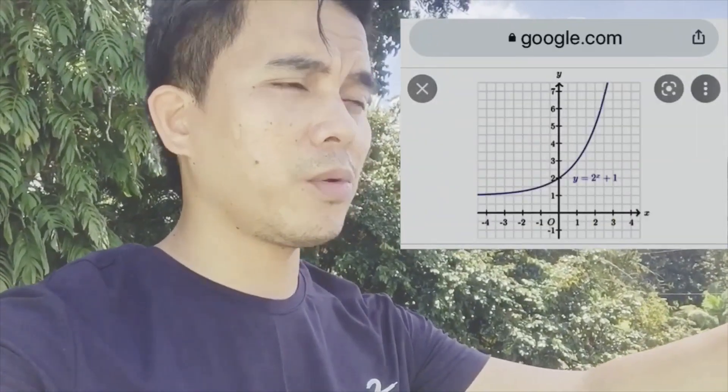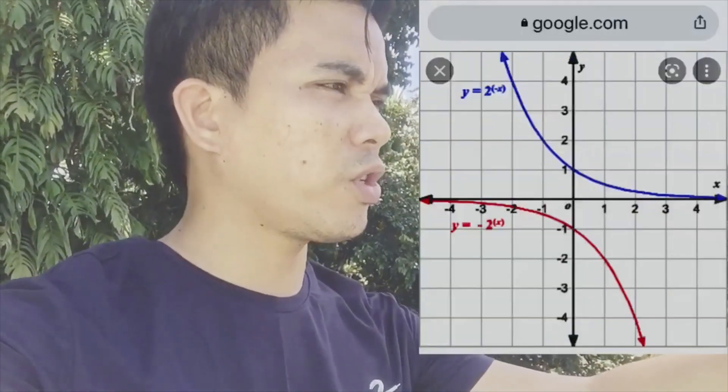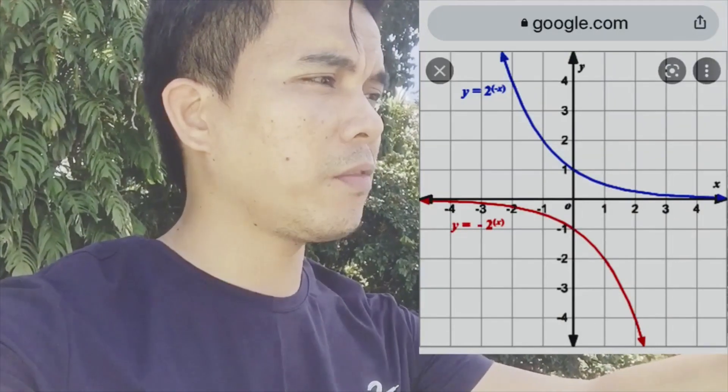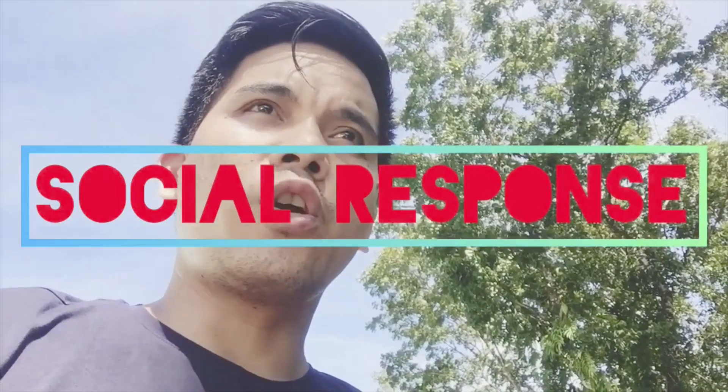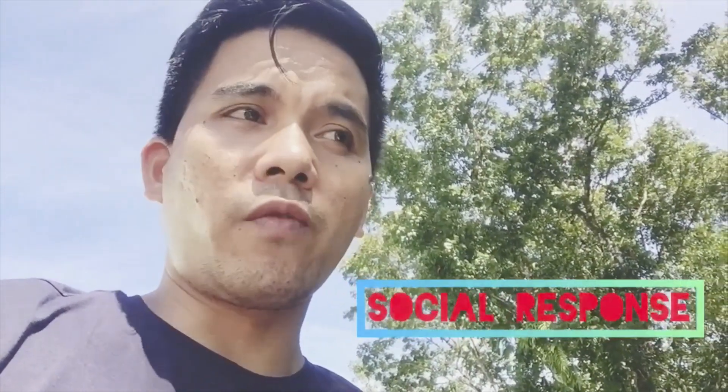Now moving to the next function — exponential function. Mathematically, the independent variable appears in the exponent. It models a relationship where a constant change in the independent variable gives the same proportional change in the dependent variable. Commonly heard on television, radio, or in the news — cases worldwide are becoming exponential, meaning rapid growth of cases and the virus everywhere. As a social response, we should take part as individuals and citizens of the Philippines to help our government.